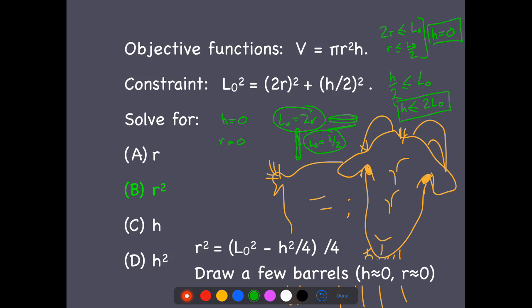So those are my two boundary limits. They're not constraints, but those are my domain limits, these two here. And so I'm looking for the best h value between 0 and 2L₀.